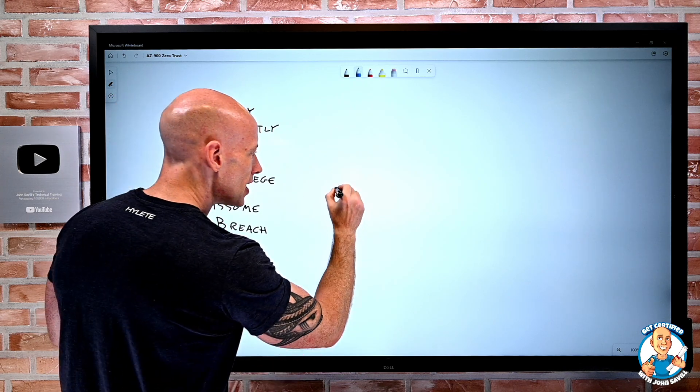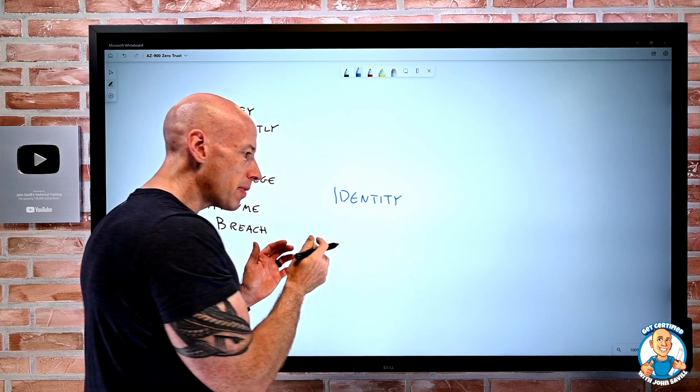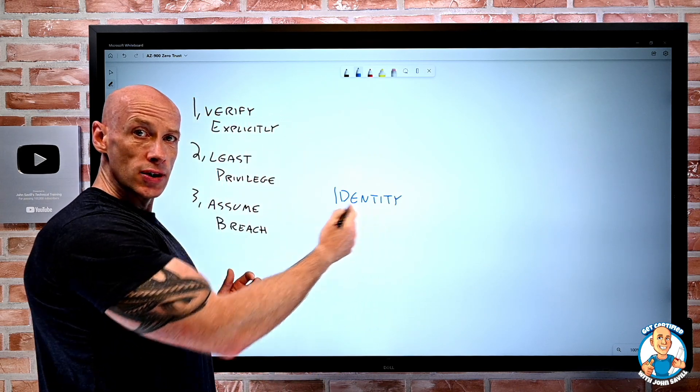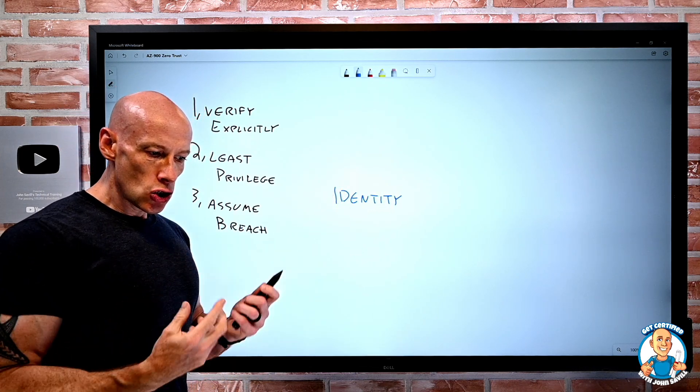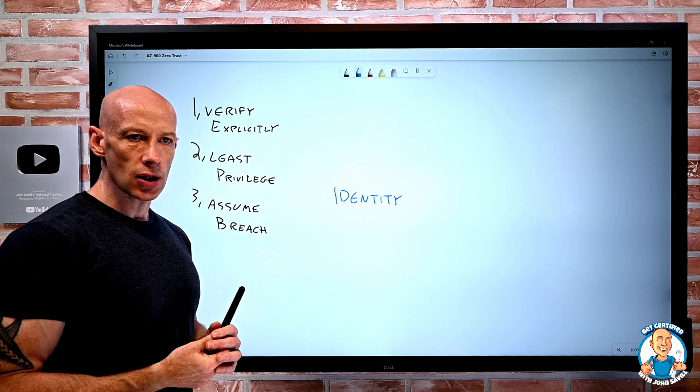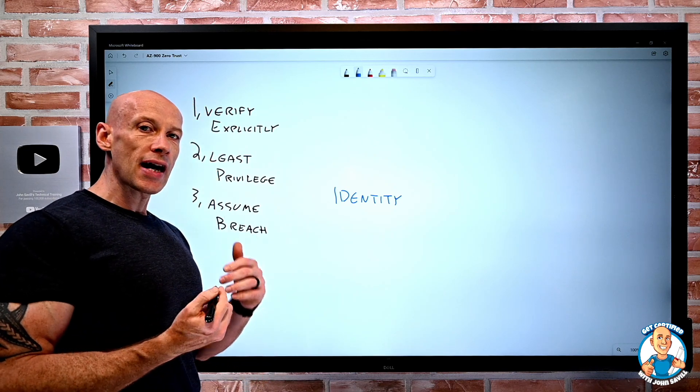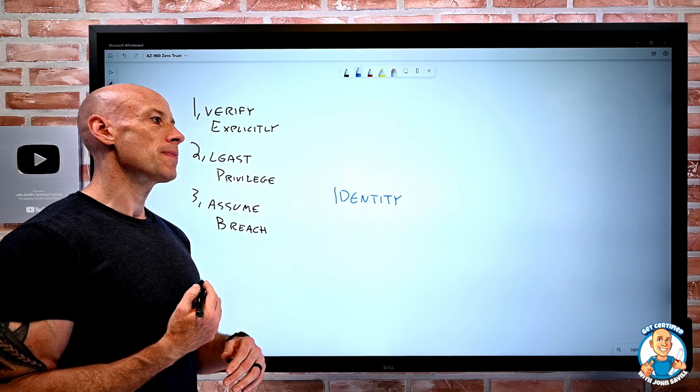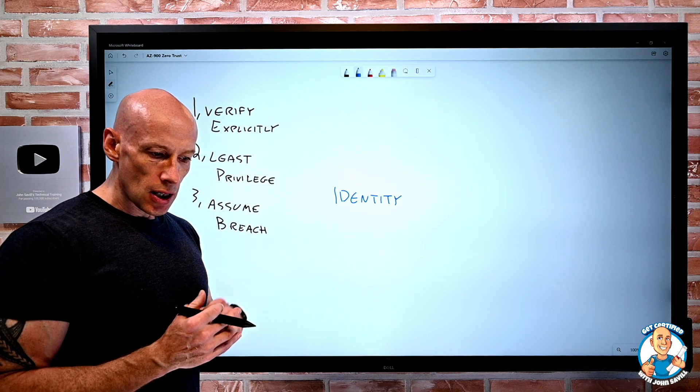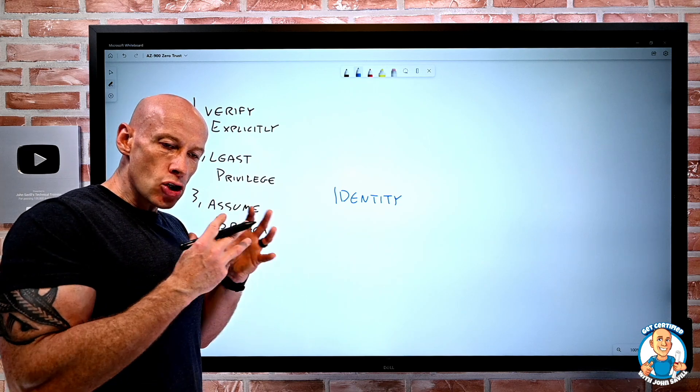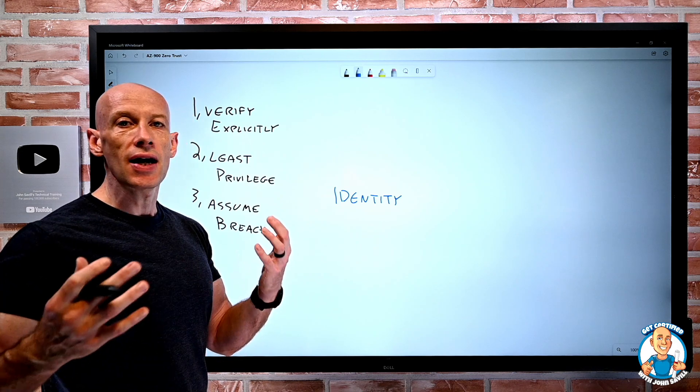Obviously, we have the identity. And again, when we think about identity, that's a user, that's a service principle, that's a managed identity. If it's a user, I want to think about good authentication. MFA, passwordless, single sign-on. We think about that role-based access control. We think about that just in time with Azure AD, privileged identity management. So I want to really make sure I'm as confident as possible for the user to assess the risk using things like identity protection.